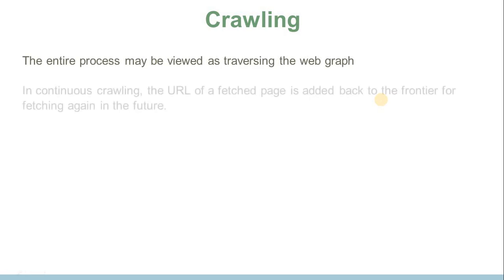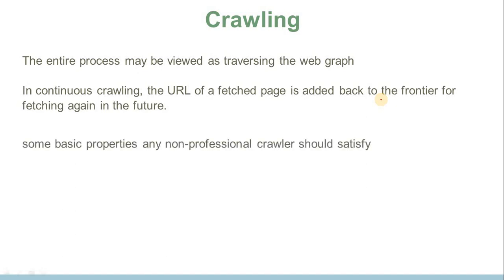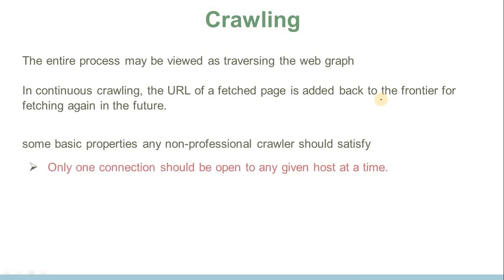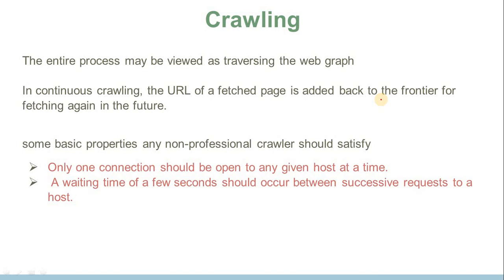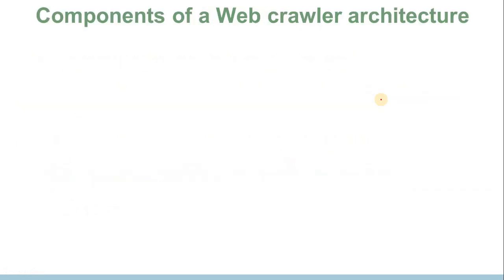The entire process may be viewed as traversing the web graph. In continuous crawling, the URL of a fetched page is added back to the frontier for fetching again in the future. Some basic properties any well-behaved crawler should satisfy: only one connection should be open to any given host at a time; a waiting time of a few seconds should occur between successive requests to a host; and politeness restrictions should be obeyed — each host has a policy limiting how many links a web crawler can crawl.